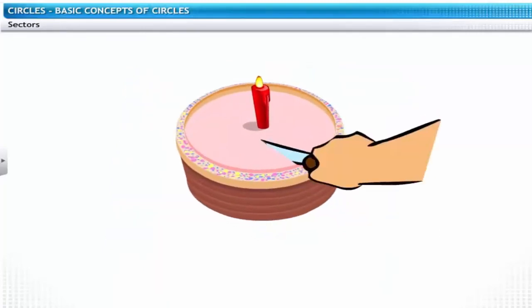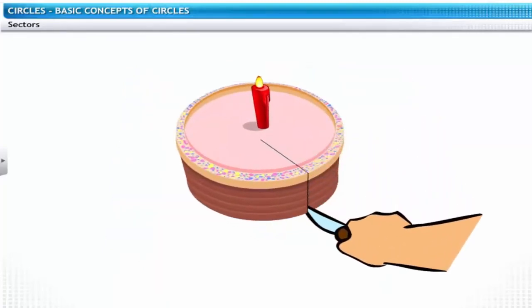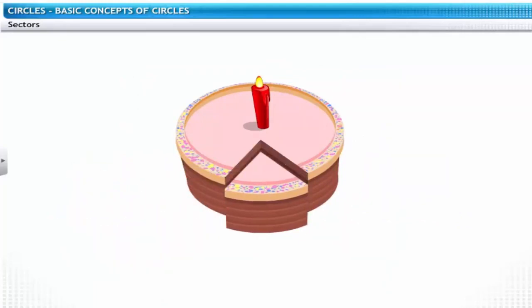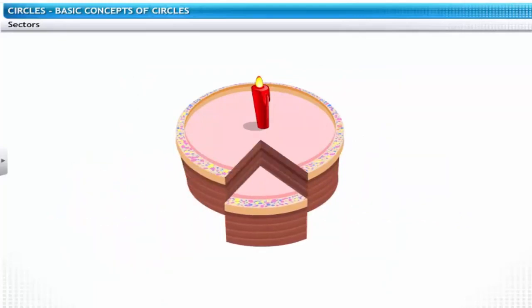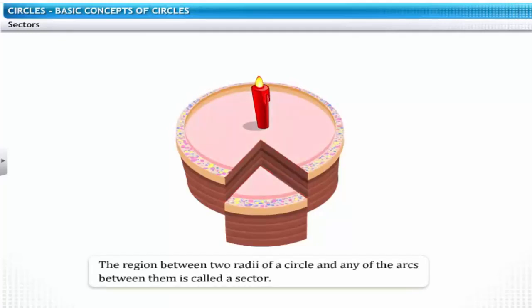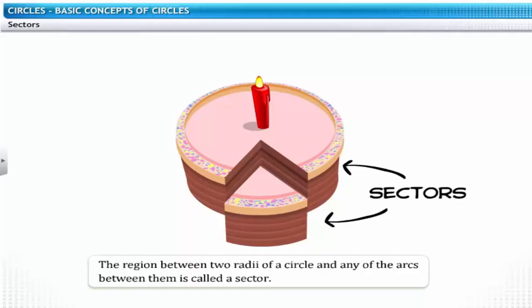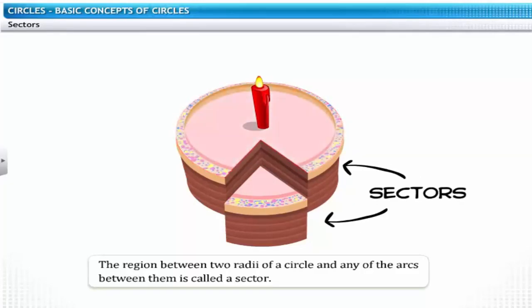Another way of cutting a cake is starting from the center and cutting it across two radii to cut a wedge. The region enclosed by any two radii of a circle and the arc between them is called a sector. The major arc forms the larger or major sector, while the minor arc forms the smaller or minor sector.